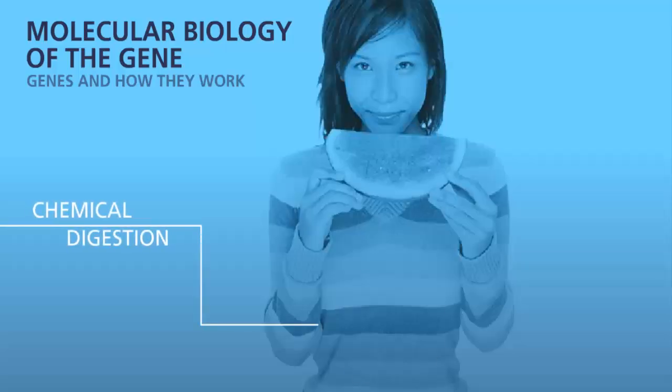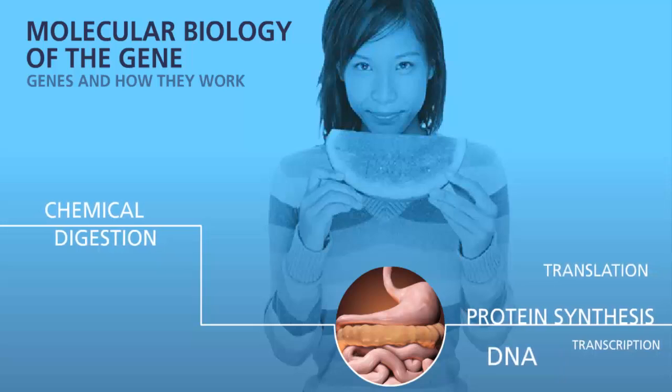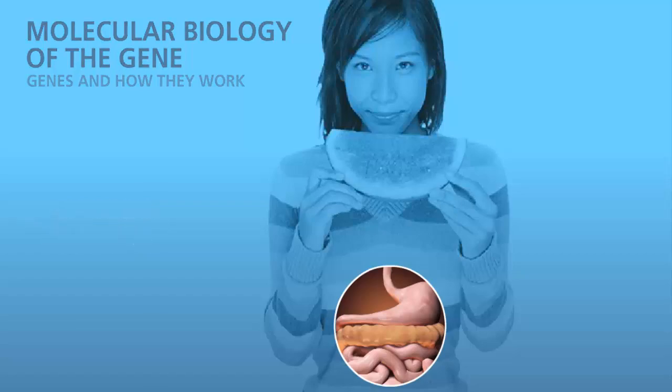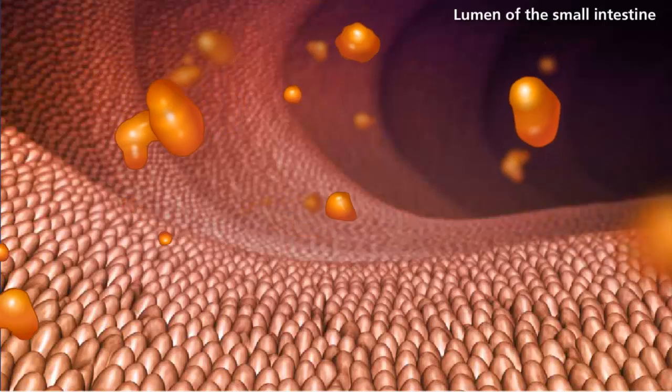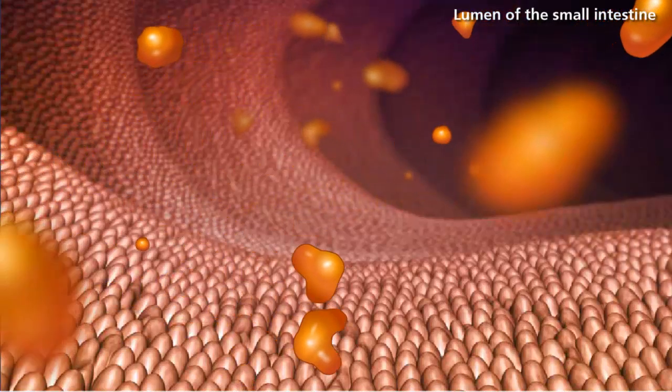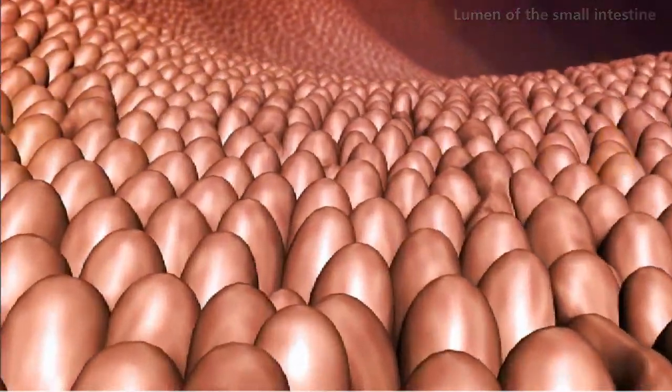In order for our bodies to function, we need to supply them with a variety of nutrients we get from our diet. Our bodies cannot use the food as it is when it enters our digestive system. The process of chemical digestion uses different proteins and enzymes to break down the food particles into usable nutrients our cells can absorb.